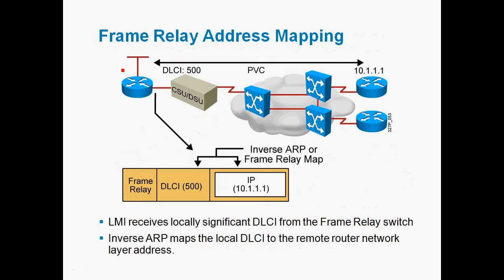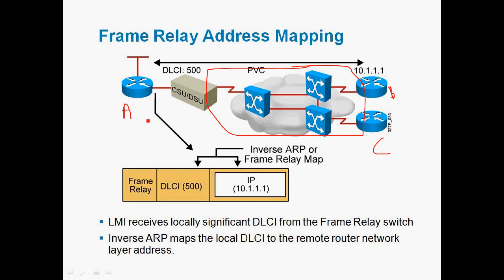Frame relay address mapping: here we can see Router A, Router B, and Router C connected through a frame relay cloud, which contains dozens of frame relay switches. In a local area network we use MAC addresses to send packets from source to destination, but in frame relay we use serial interfaces. Since we cannot create MAC addresses on serial interfaces, instead of MAC addresses we use the DLCI value to send data from source to destination.